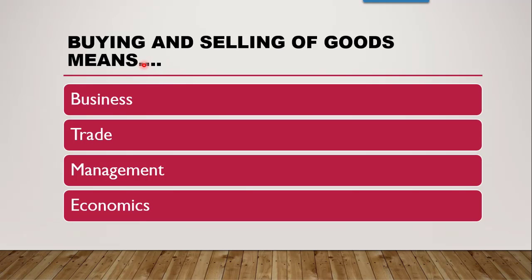The next question is: buying and selling of goods means — whether it is business, trade, management, or economics. The correct answer is trade. According to the definition, trade is buying and selling of goods. Business is to remain busy in various activities. Management involves coordinating and organizing. Economics is the study of man's behaviour towards earning — the study of utilities essential for living which one needs to earn.